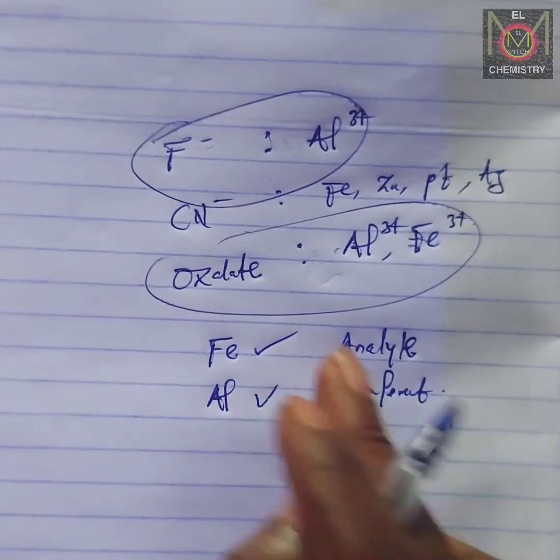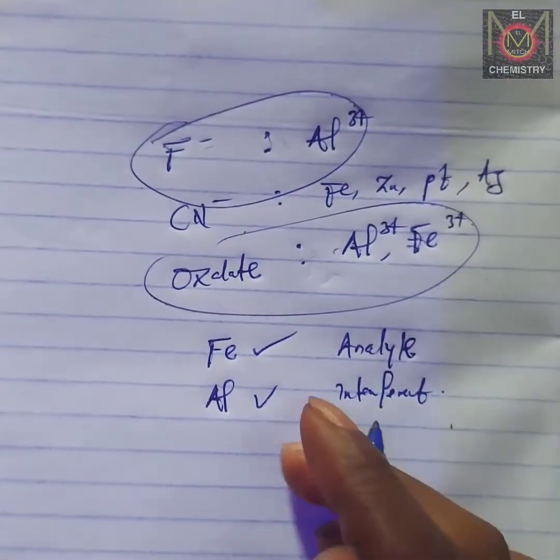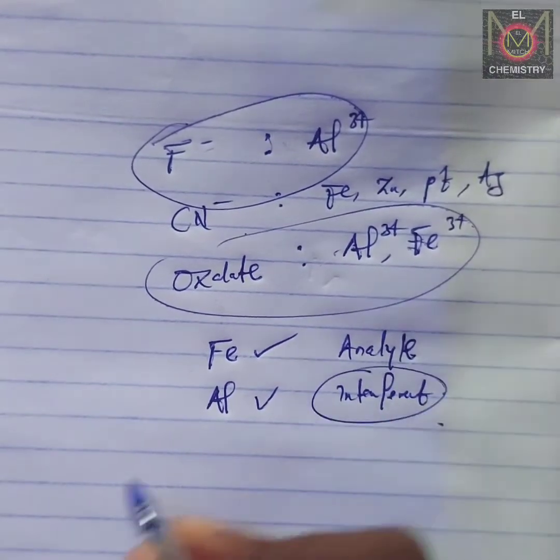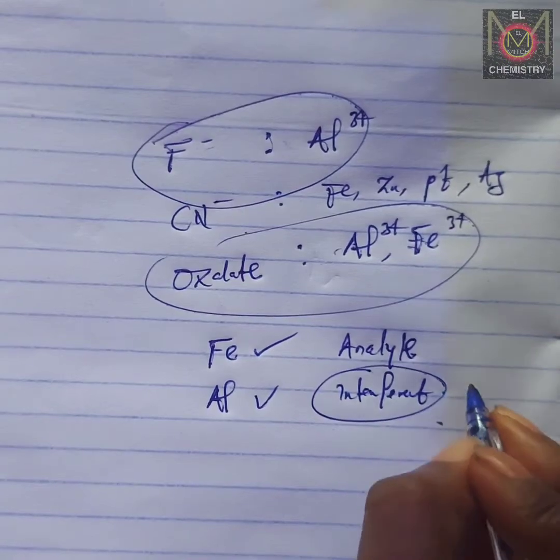In the presence of aluminum, which is our interference. So we have iron as our analyte and aluminum as our interference.